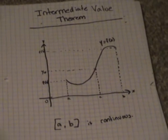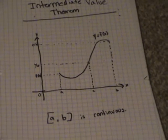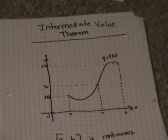Intermediate value theorem. Okay, so we learned about continuity and what it means to be continuous is that if [a, b] is